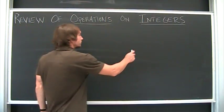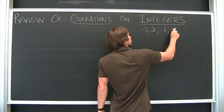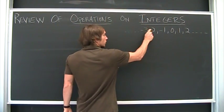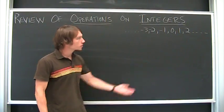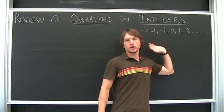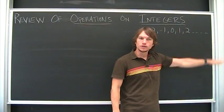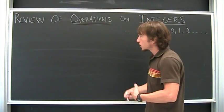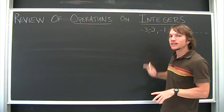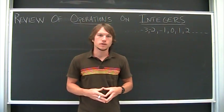The integers are the set of numbers: negative one, negative two, negative three going all the way back, zero, one, two, going all the way forward — getting smaller and smaller in the negative direction, getting larger and larger in the positive direction. What chapter one is dedicated to is fractions, but before we get into fractions, we want to make sure we know how to deal with the pluses and the minuses — what to do with those.